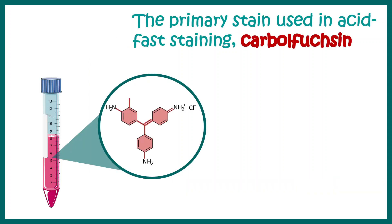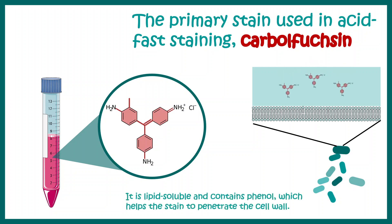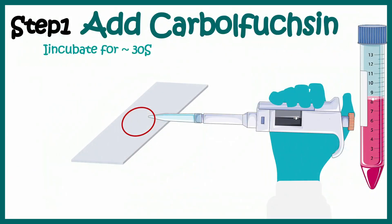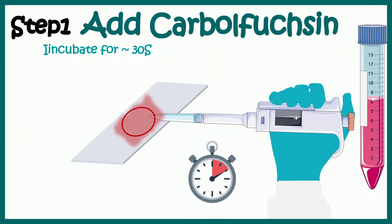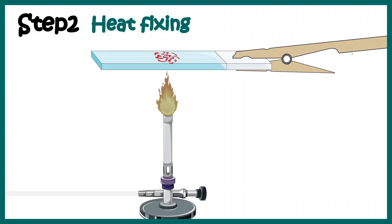The primary stain involves carbol fuchsin. Carbol fuchsin is a stain which has phenol in it, and it can really penetrate even the impermeable mycolic acid-containing cell wall, getting inside the cell. Carbol fuchsin contains basic fuchsin, ethanol, heat-melted crystals of phenol, and distilled water. At this step, all the bacteria — acid-fast and non-acid-fast alike — would be colored red with the carbol fuchsin, and this incubation would happen for about 30 seconds. After this step, there is a heat fixation step which fixes the stain further, ensuring the bacteria adhere to the slide and do not wash away when other reagents are added.